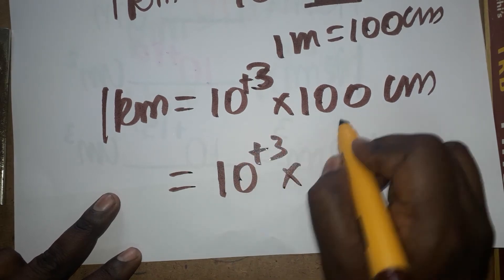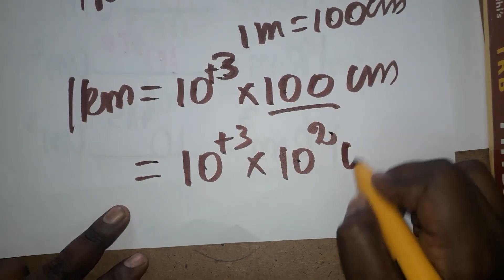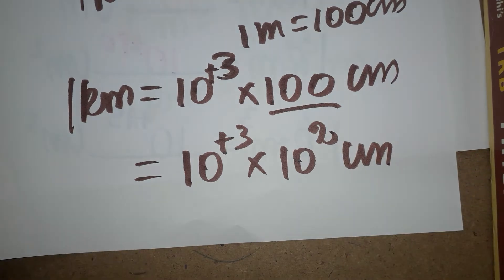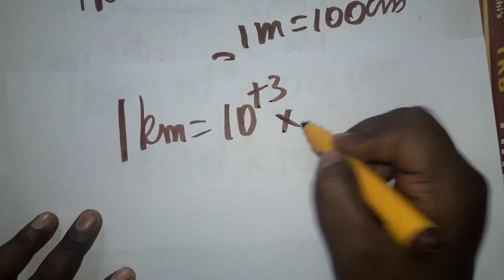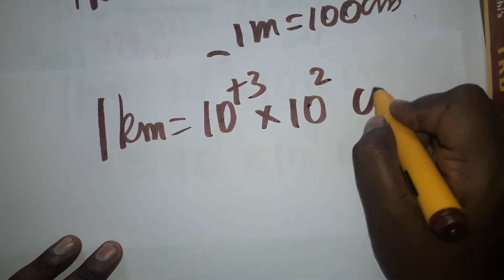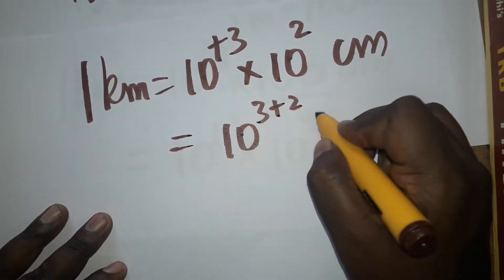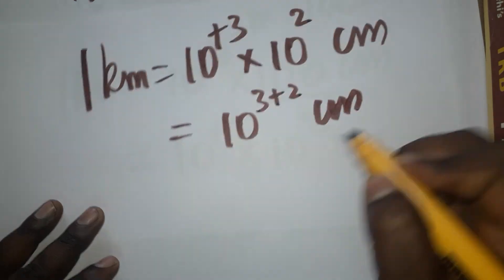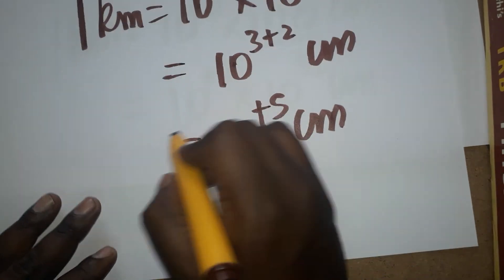Now I have converted: 1 kilometer equals 10 power 3 into 100 centimeter. 100 can be written as 10 power 2. So 1 kilometer equals 10 power 3 into 10 power 2 centimeter. That gives us 10 power 3 plus 2, which is 10 power 5 centimeter.